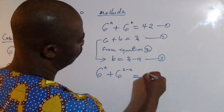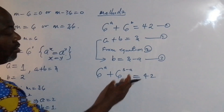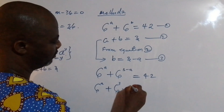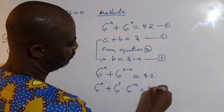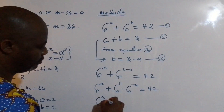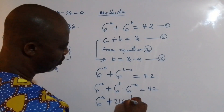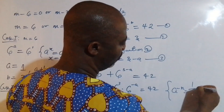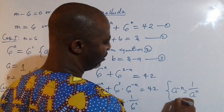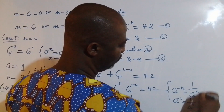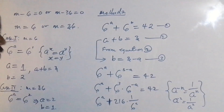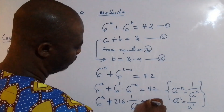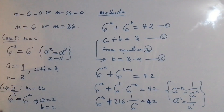Substituting gives 6^a + 6^(3−a) = 42. I apply the law to split this up: 6^a + 6^3 · 6^(−a) = 42. Since a^(−n) = 1/a^n, this becomes 6^a + 216 · (1/6^a) = 42. So we have 6^a + 216/6^a = 42.